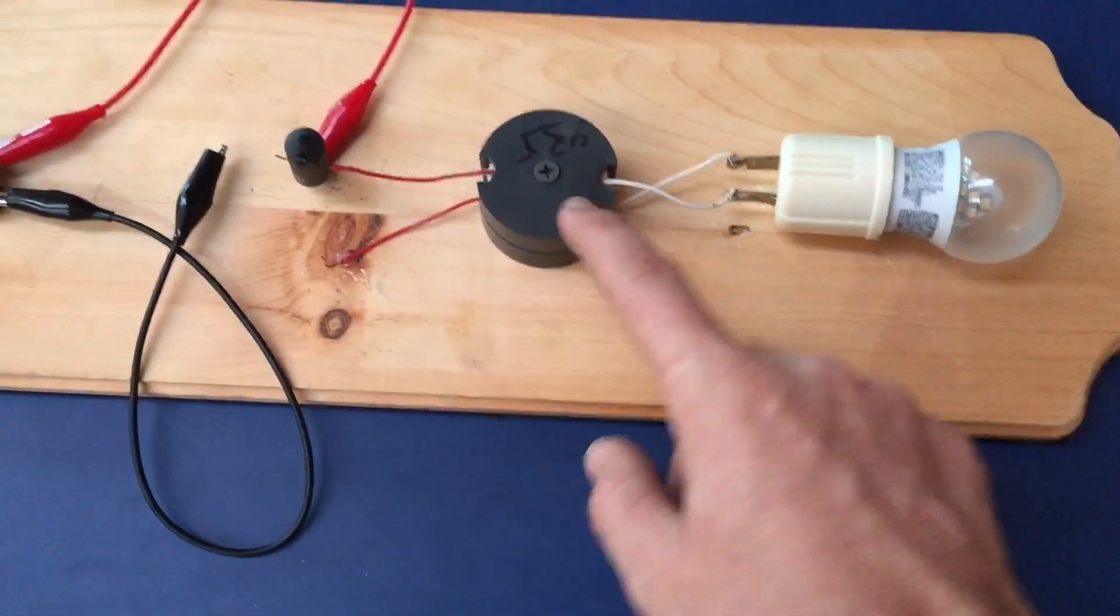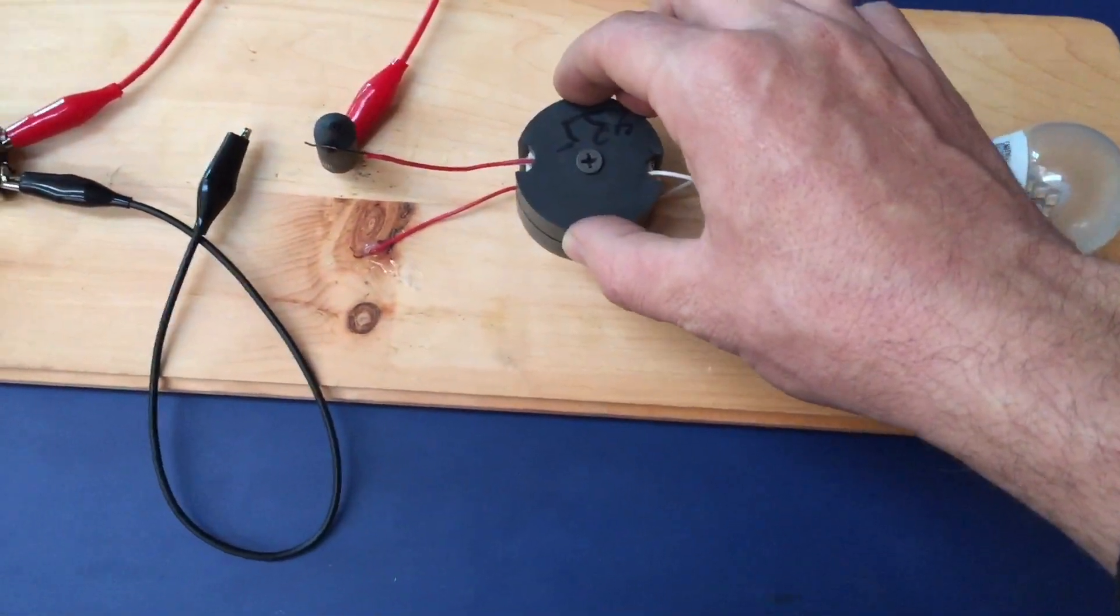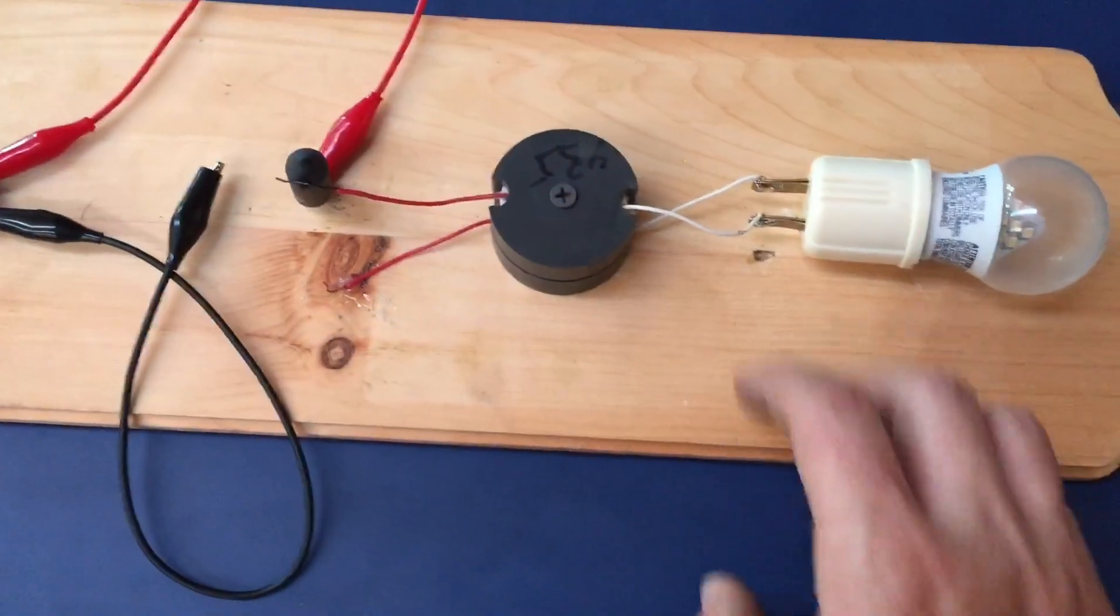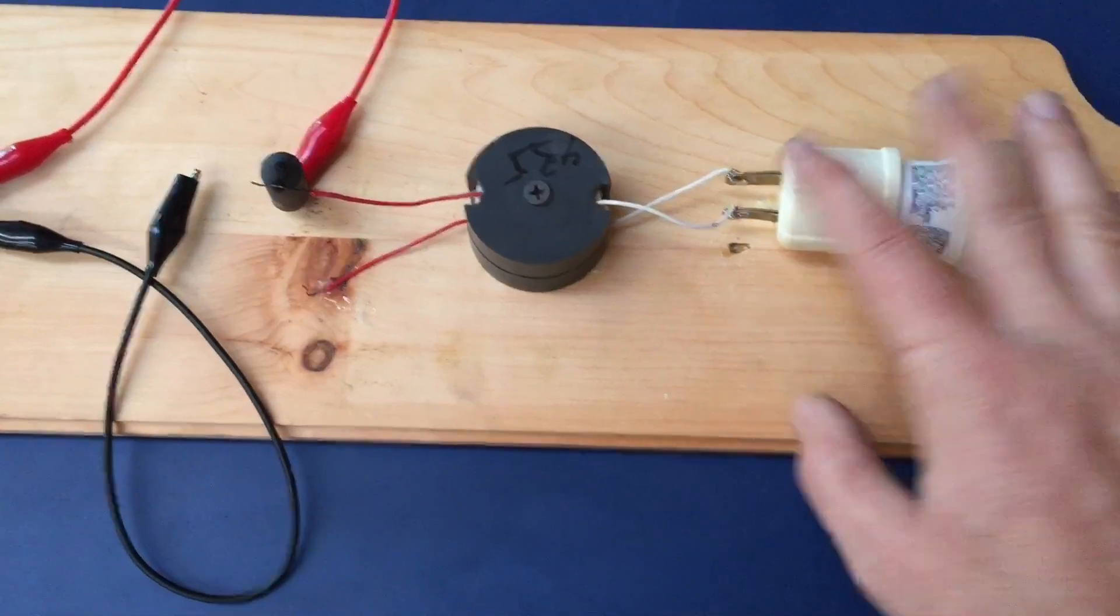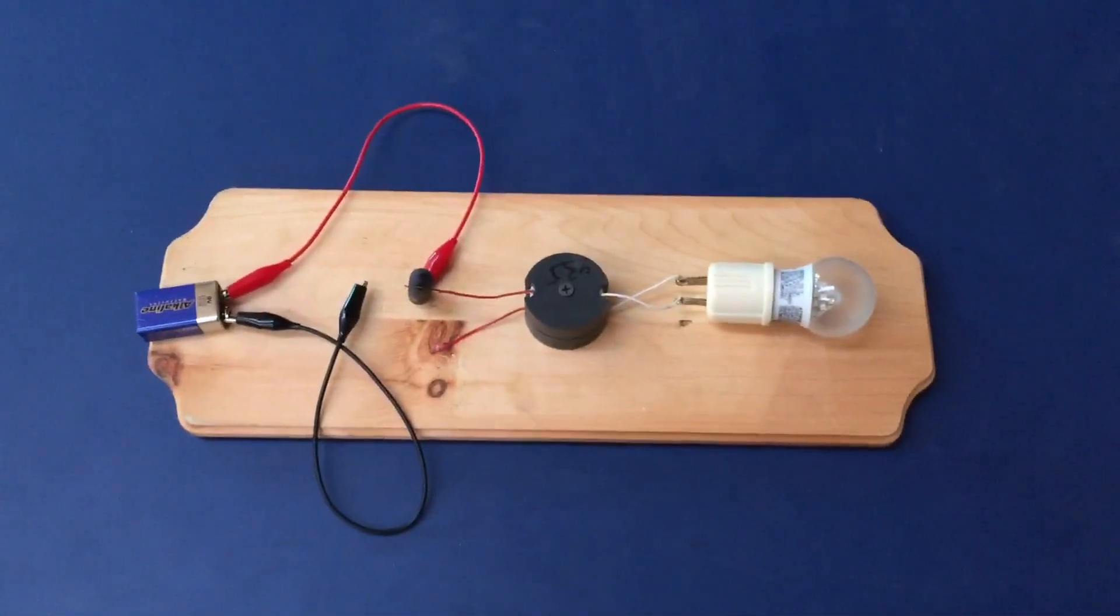So, I was experimenting with this pot core, noticing that when I short this side and energize it as an electromagnet and release the energy, it would continue to hold energy. While doing that, I decided to connect a load. One thing led to another, and I came up with this arrangement, which is really the fun of experimenting.